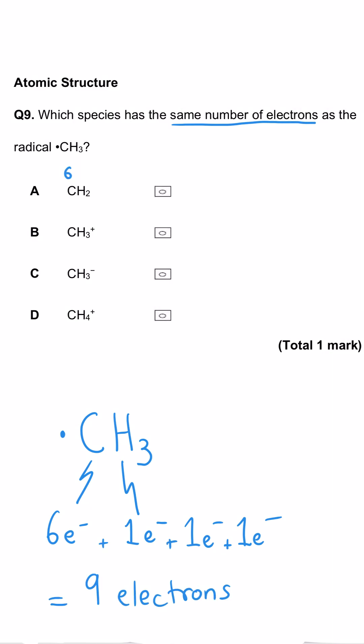Well, A has got six electrons from the carbon and two from those two hydrogen, so that's eight, so it's wrong. B has got six from the carbon, three from the three hydrogen. It's lost an electron because it's positive, and so that takes us to eight again, so also wrong. CH3- has got six and three, and it's gained one, so that's ten, so that's wrong. And D is the correct answer because it's got six and four. We've lost one because it's positive, so nine.